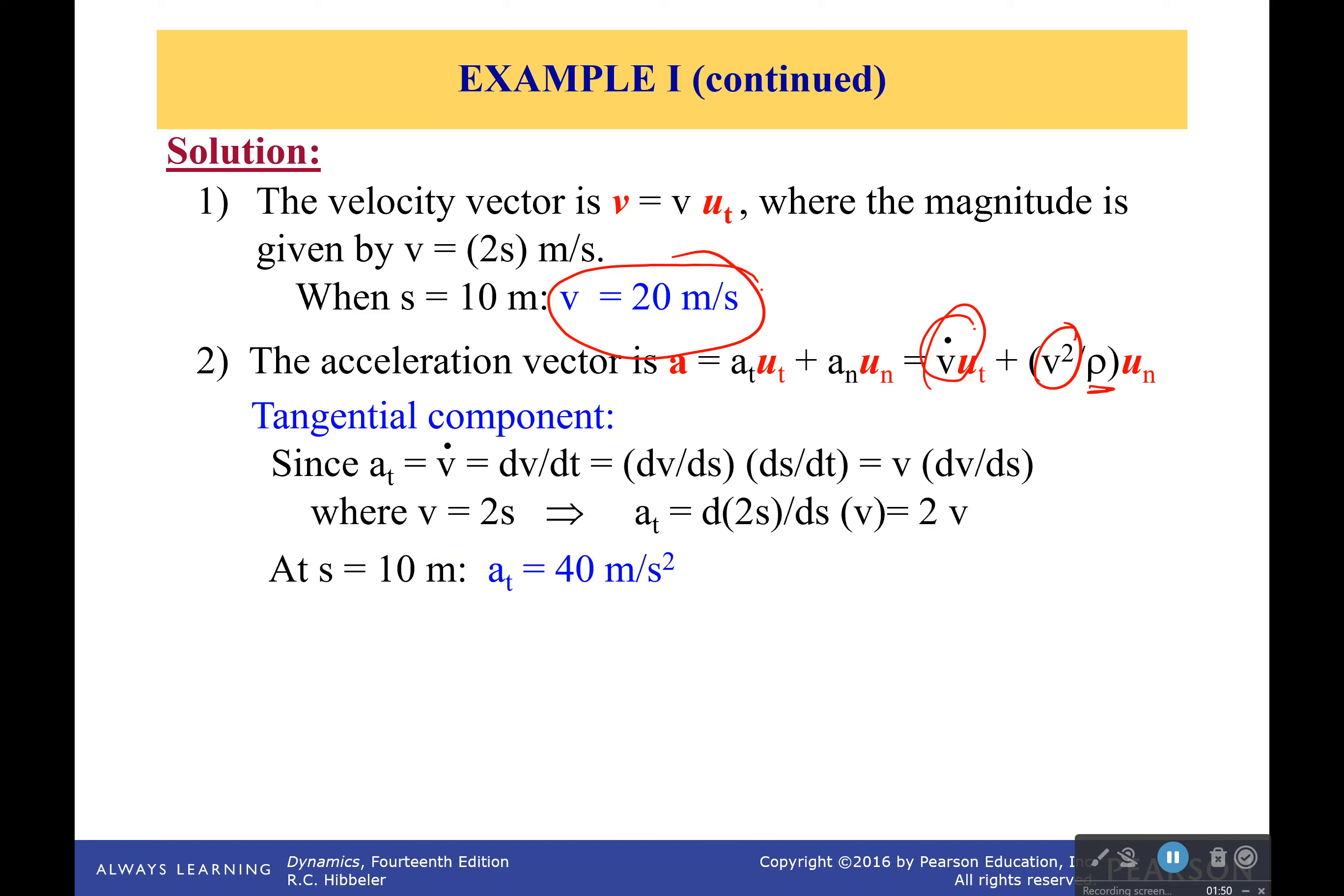Now this one is pretty easy, but I really want to look at this one right here because this is one that's going to probably confuse you. V dot is equal to dv/dt. But we do not know how the velocity changes with time. We only know how the velocity changes with position.